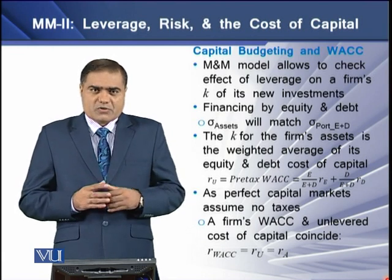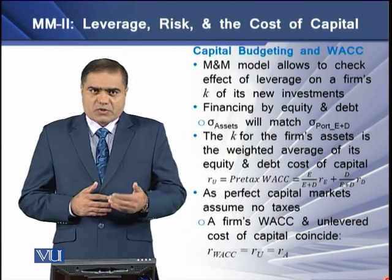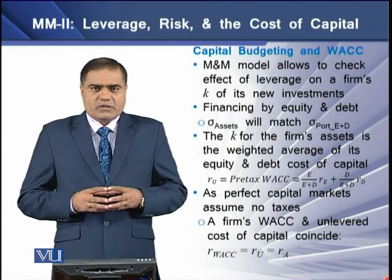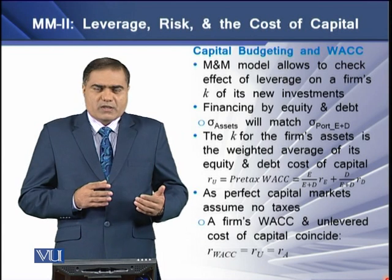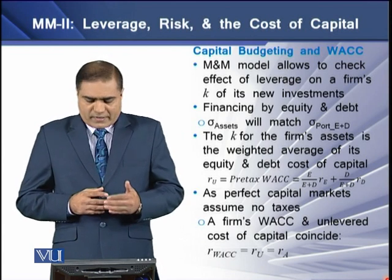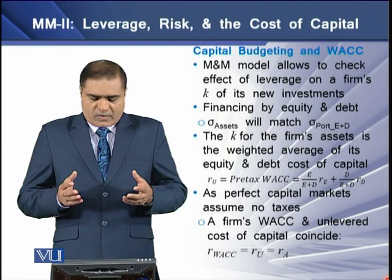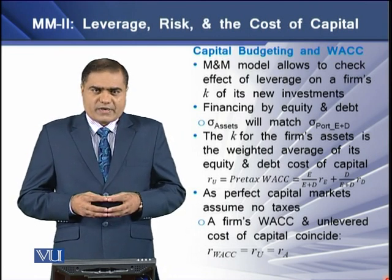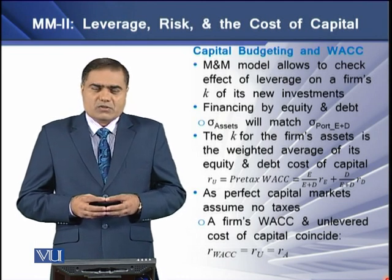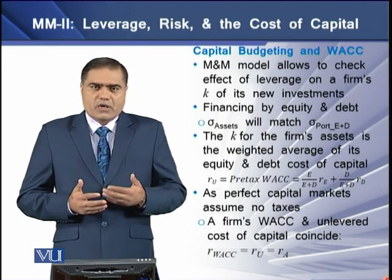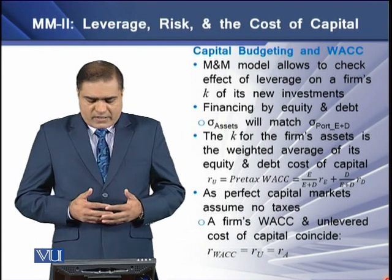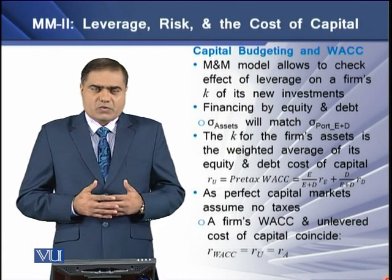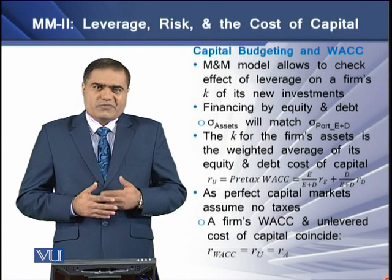The overall cost of capital for the firm's assets is the weighted average of its equity and debt cost of capital. The return on unlevered equity, which equals the pre-tax WACC, equals the proportional returns of equity and debt. In a perfect capital market with no taxes, the firm's weighted average cost of capital and its unlevered cost of capital are equal — that is, WACC equals the return earned by the firm's underlying assets.